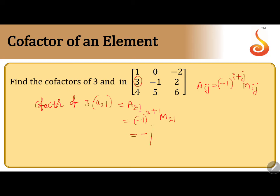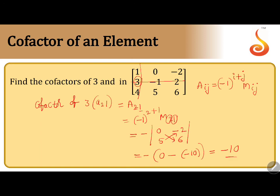M21 is the determinant of the submatrix obtained by deleting the second row and first column. The remaining elements are: 0, minus 2, 5, 6. So: minus of (0 into 6) minus (5 into minus 2), which gives minus of (0 minus minus 10), equals minus of plus 10, giving minus 10. This is the way of finding the cofactor of an element.